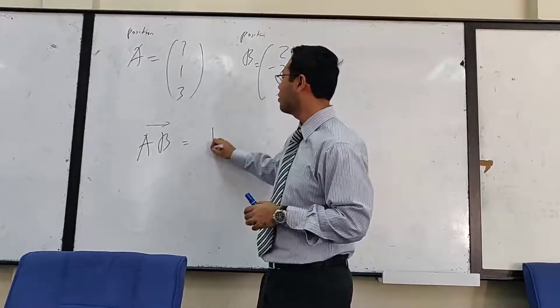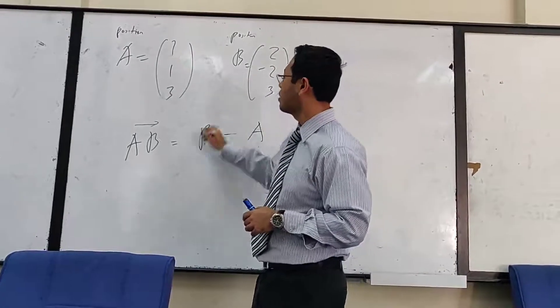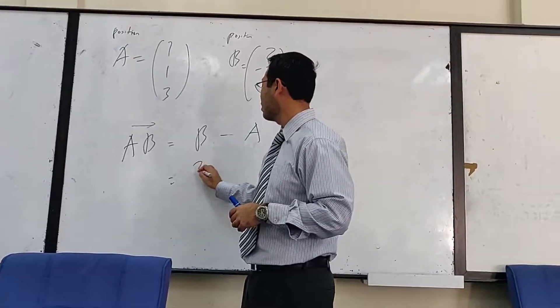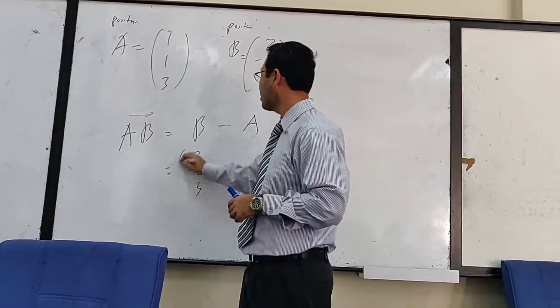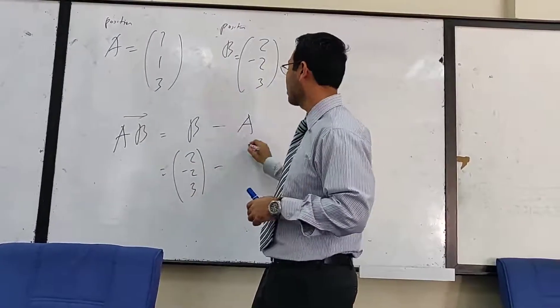I simply do B minus A. So this vector B: 2, negative 2, 3, minus that: 1, 1, 3.